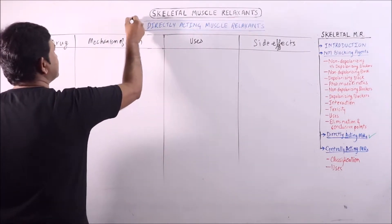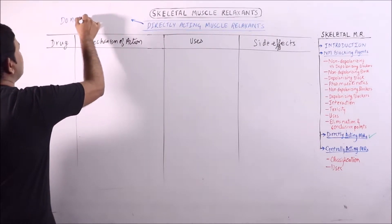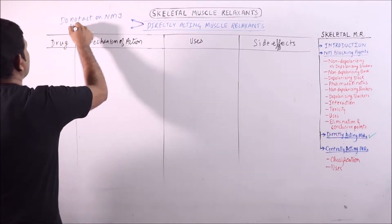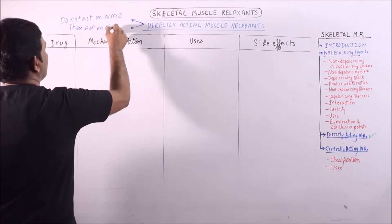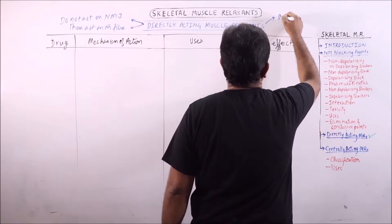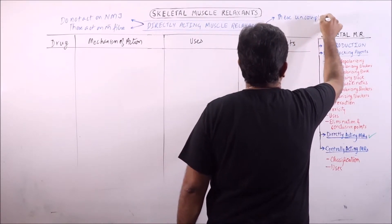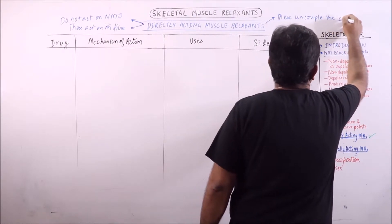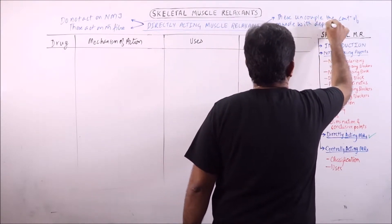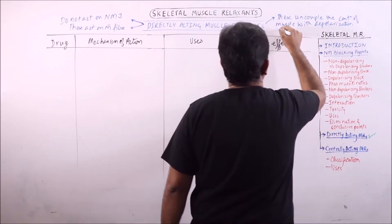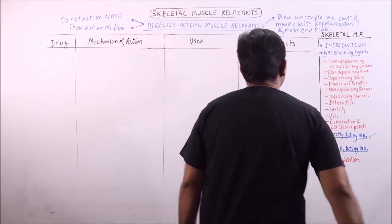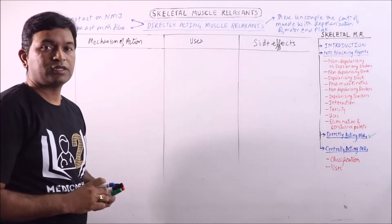Directly acting muscle relaxants do not act on the neuromuscular junction. These act on the muscle fiber usually. Their main function is that they uncouple the contraction of muscle with depolarization of the motor end plate. That is, the motor end plate is depolarized but it will not result in muscle contraction.